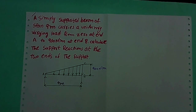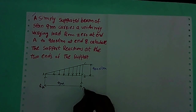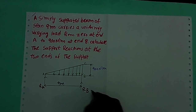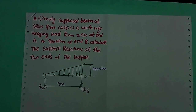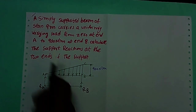I am assuming reaction at A is RA. Reaction at B is RB. Now we have to find the RA value and RB value. Before that, first we see the problem.